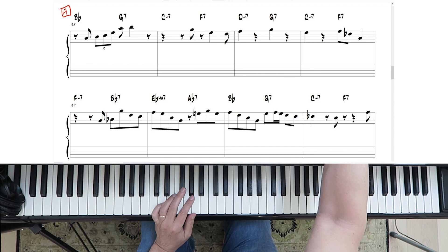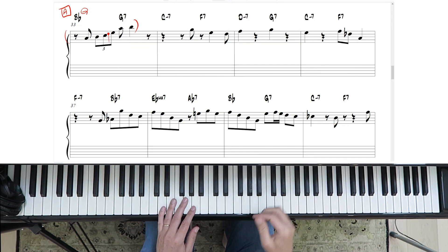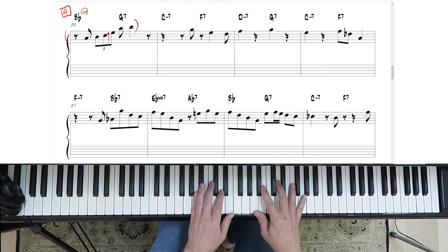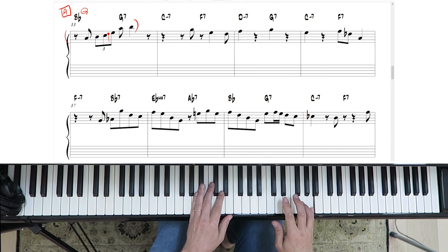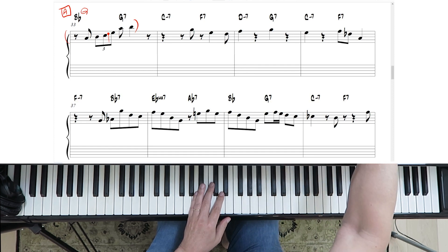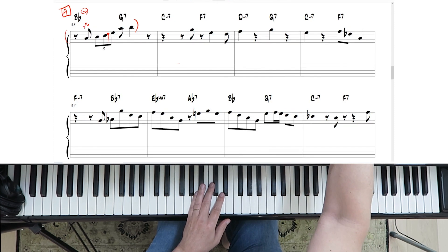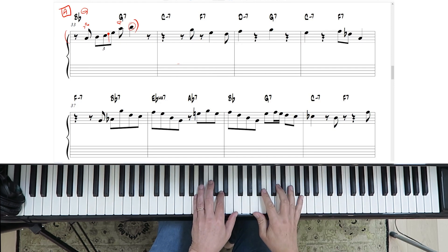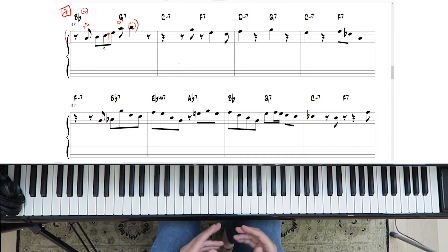So the first thing you'll see is this standard lick where it's playing a Bbmaj7 chord. I believe that this C should be a D. It may have been a mistake in the transcription or a mistake by Sonny Rollins, but it's better just to play it as a D. Because it's basically starting on the 7th and ending on the 7th and then the root at the end. That's pretty standard. Great sound.